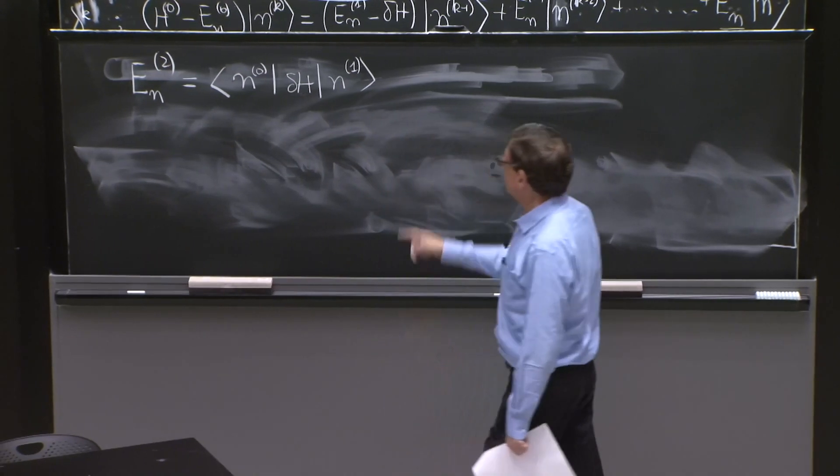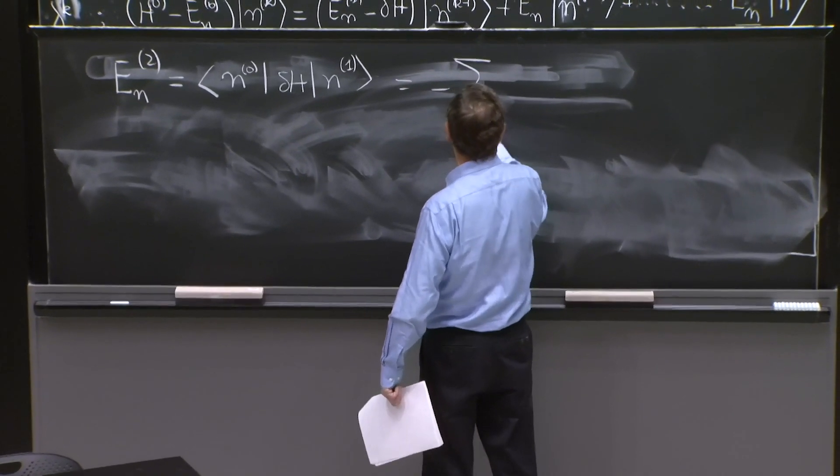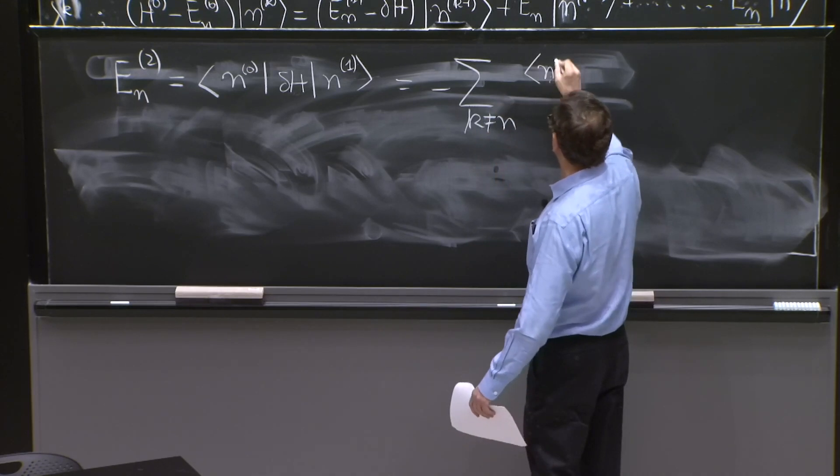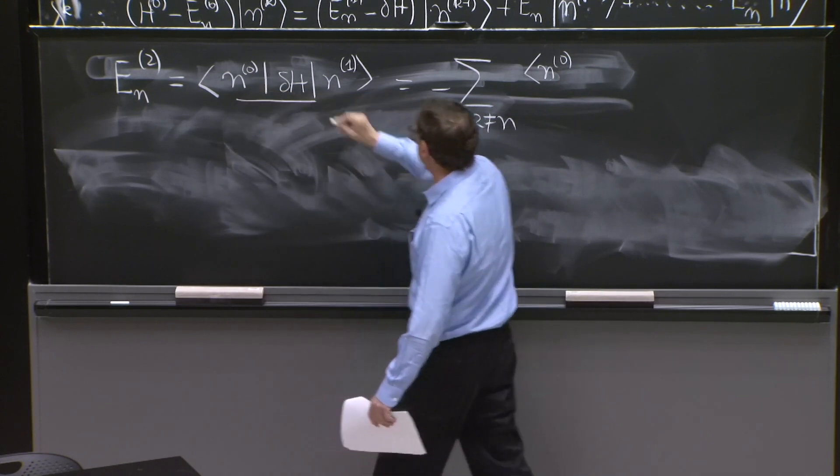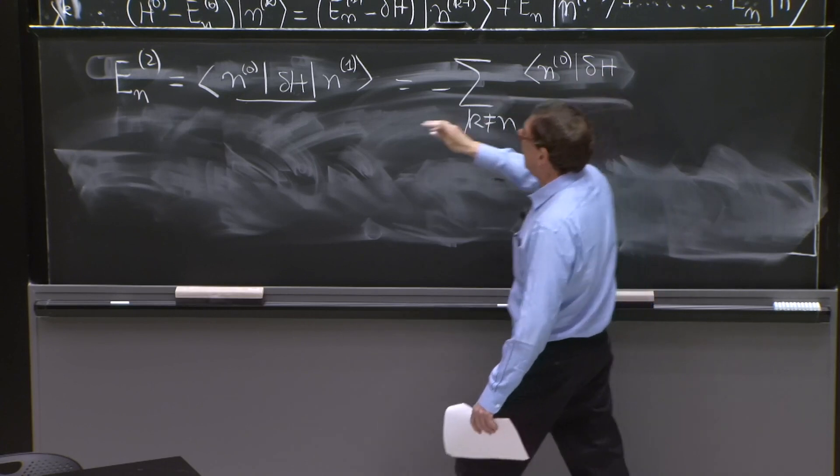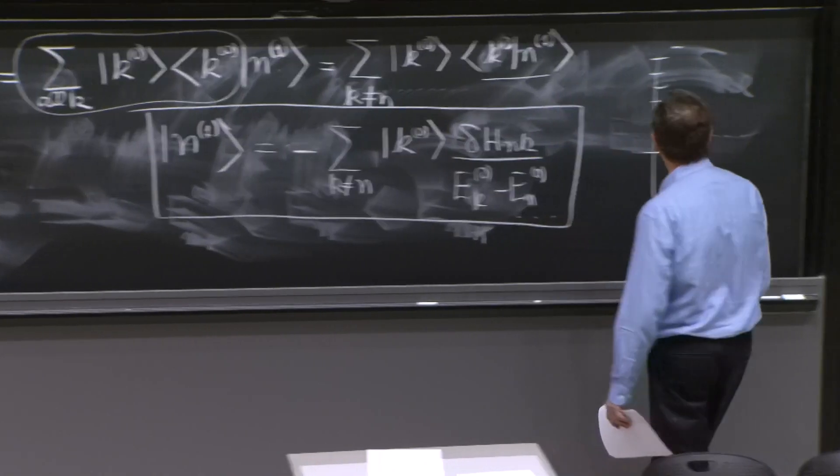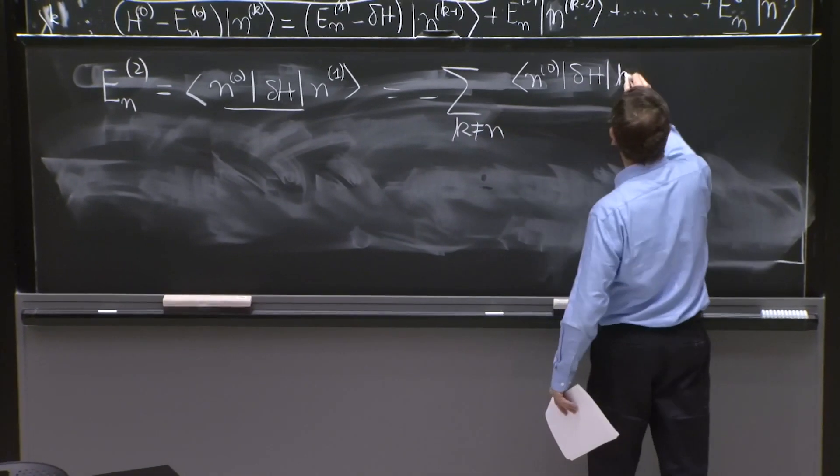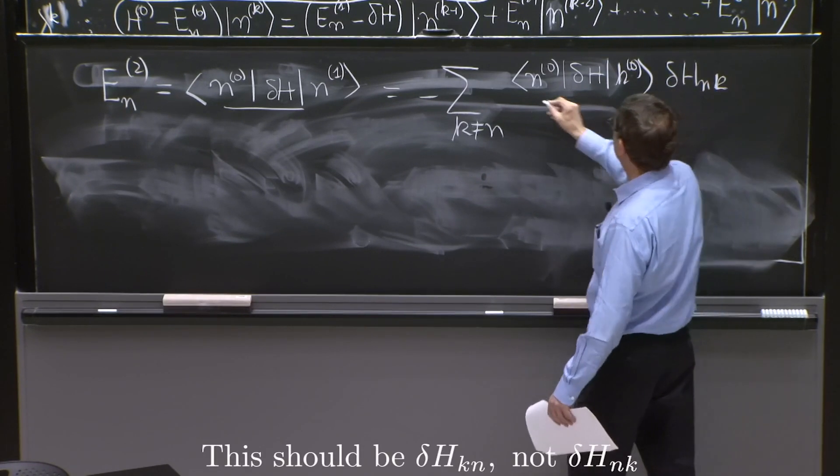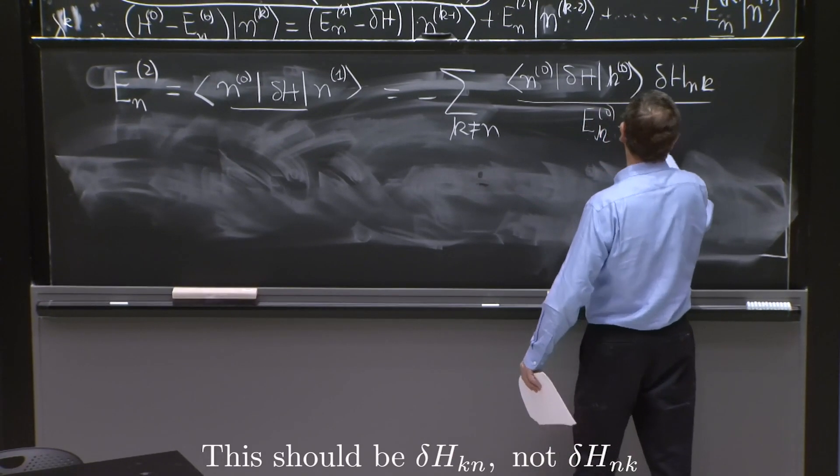E_n2 is obtained by doing n0 delta H times n1, which we already know. So I must do n0 delta H on that. So look what you get. You get minus the sum over k different from n. Think of putting the n0 and the delta H—they're all together. It's a bra so far. It's a delta H and n0. It should go into n1, but the only state in n1 is k0. So here we have k0, and then we have delta H_nk over E_k0 minus E_n0.